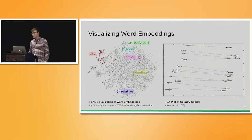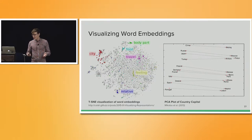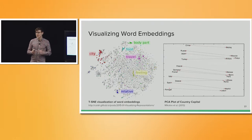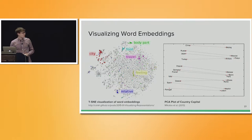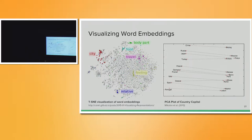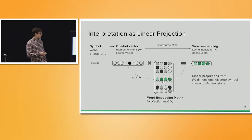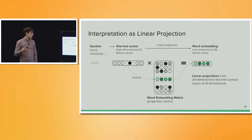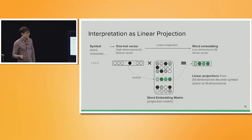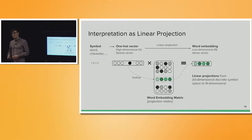Interestingly, the vectors learned this way have some interesting regularities. In two-dimensional projections, similar concepts like different cities or different body parts tend to cluster close to one another. You also find translational symmetries — for example, a standard direction in vector space traverses from different countries to their respective capitals. Another interpretation of word embeddings is as linear projections from a V-dimensional discrete symbol space to a lower-dimensional N-dimensional vector space, essentially performing a lookup operation from the one-hot vector in the word embedding matrix.